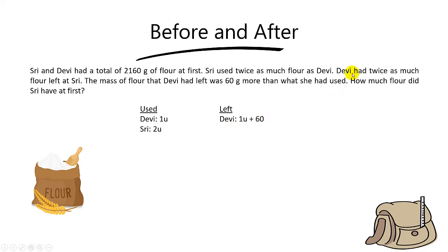And how to find Shree? Look at this sentence here. Debbie had twice as much flour left as Shree. Since Debbie got twice as much flour left as Shree, to find the flour left for Shree, you simply take Debbie divided by 2. Because this is twice of Shree.